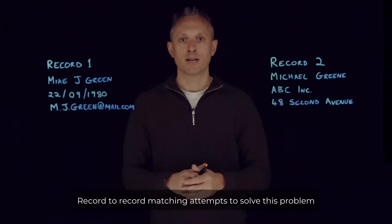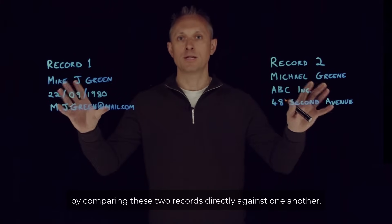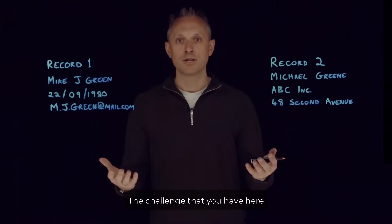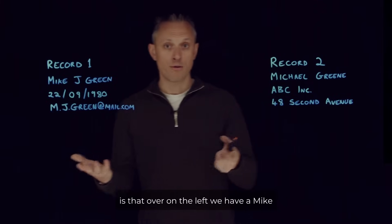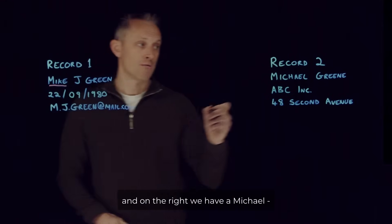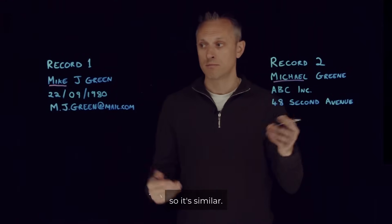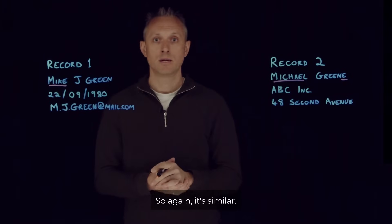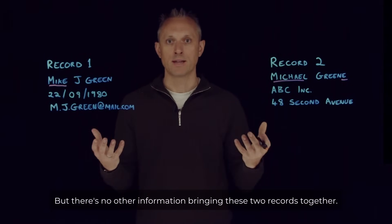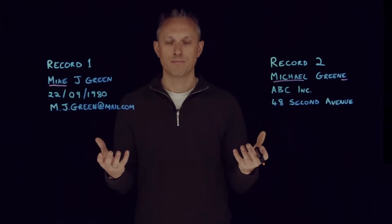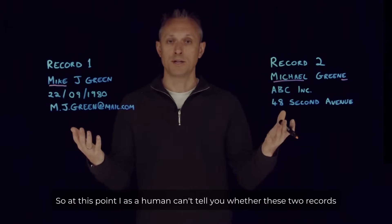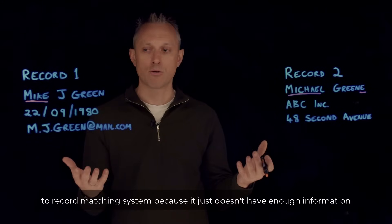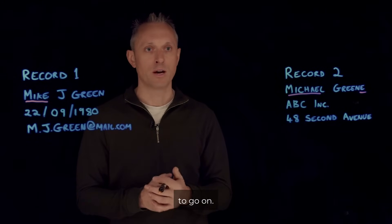Record to Record Matching attempts to solve this problem by comparing these two records directly against one another. The challenge is that on the left we have a Mike and on the right we have a Michael, so it's similar. On the left we have a Green and on the right we have a Green with an E — again similar, but there's no other information bringing these two records together. At this point, I as a human can't tell you whether these two records are talking about the same person, and neither can a Record to Record Matching system, because it just doesn't have enough information to go on.